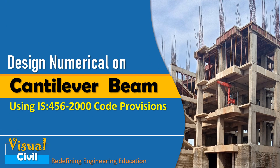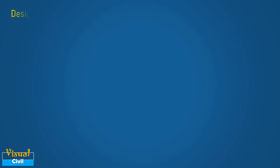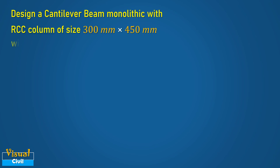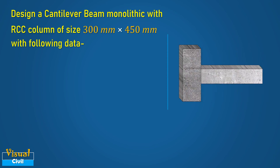This video demonstrates the design procedure of a cantilever reinforced RCC beam as per IS 456-2000 code provisions. Watch this video till the end to know the requirement of steel at the bottom face of the cantilever beam, which is often ignored during problem solving. In this video, we will learn the design of a cantilever beam which is monolithic with an RCC column of size 300 mm by 450 mm for the following data.